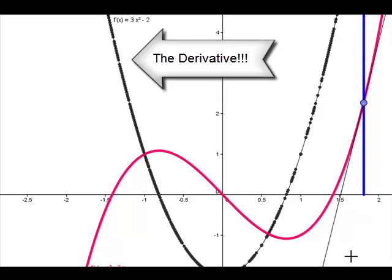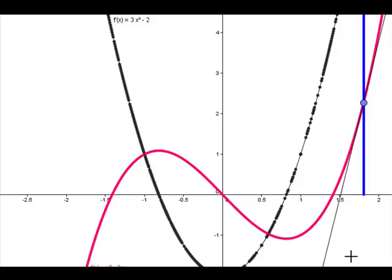So here we have the graph of the derivative of the original function. So the black graph is the derivative of the red graph. Its outputs are the slopes at each input of the red graph.